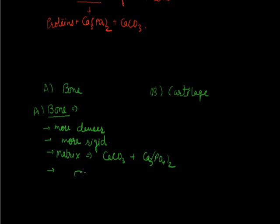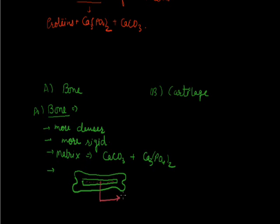Bones are quite long, and in long bones a blank cavity is present. This cavity is filled up with a specific substance called bone marrow. Bone marrow acts as the site for the production of RBCs and WBCs. So, along with support and protection, bone also acts as the site for the production of blood cells.